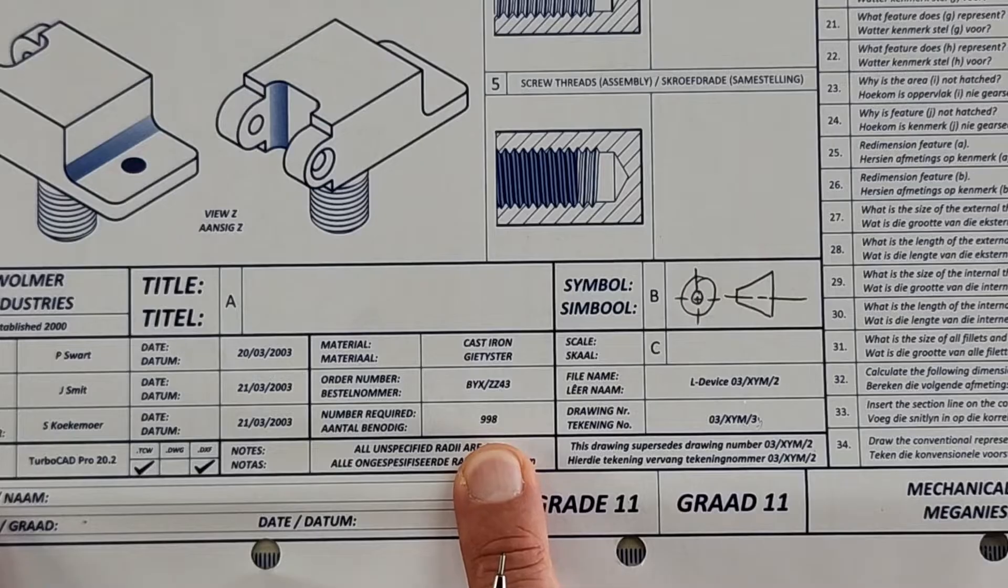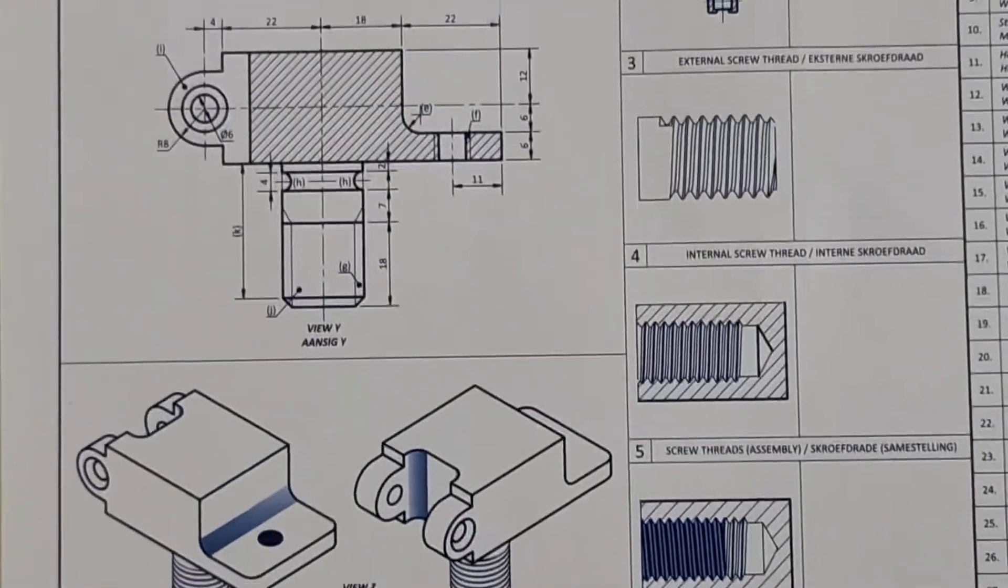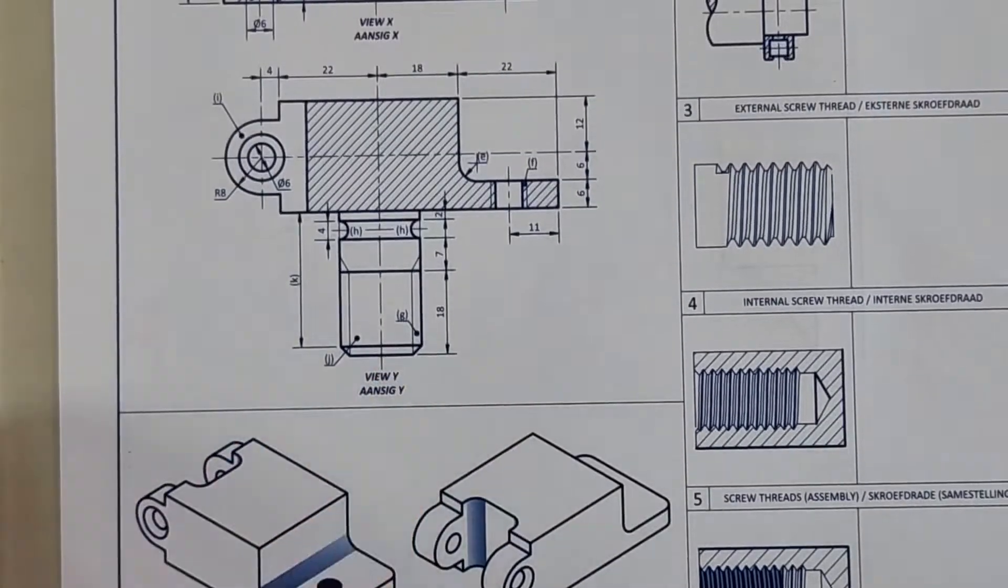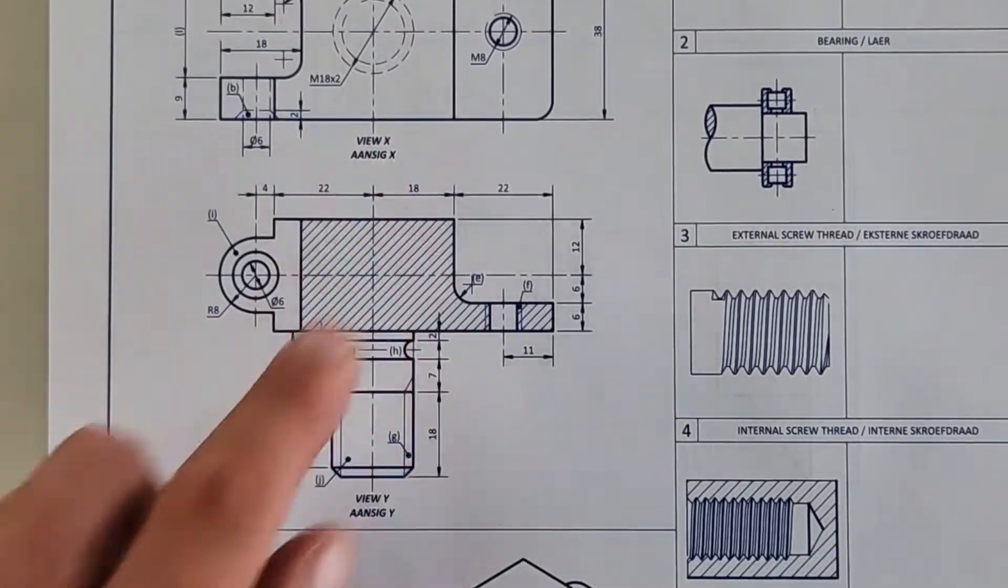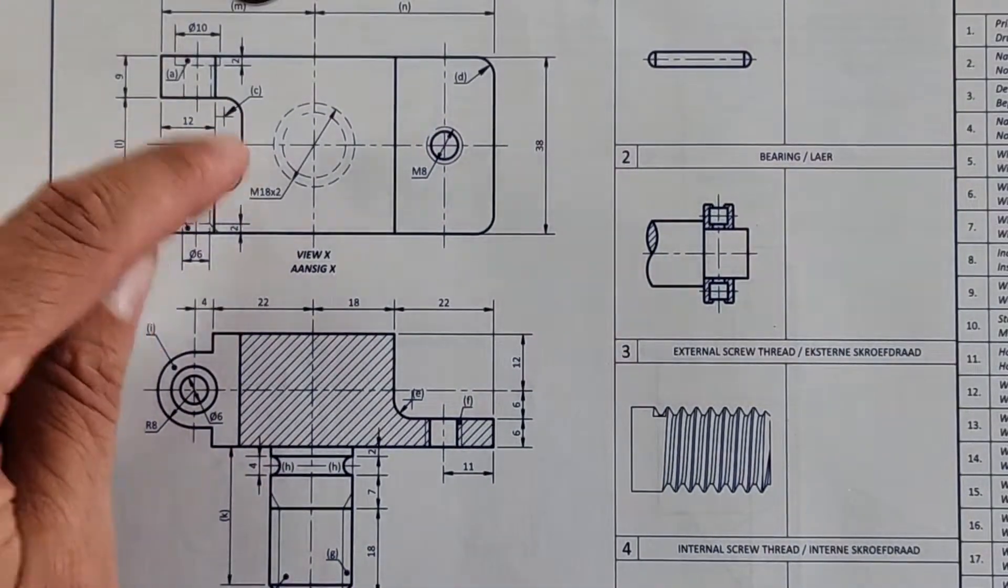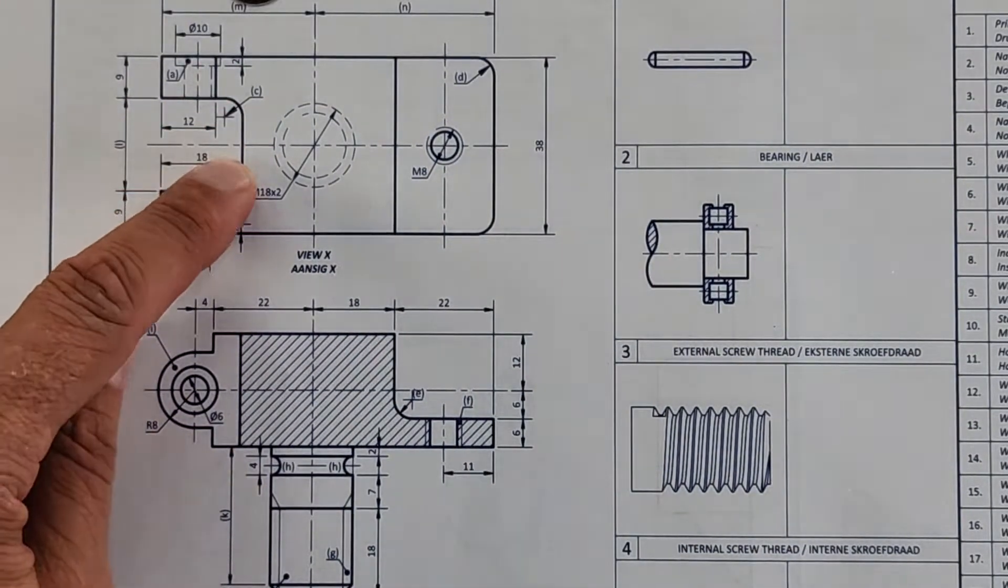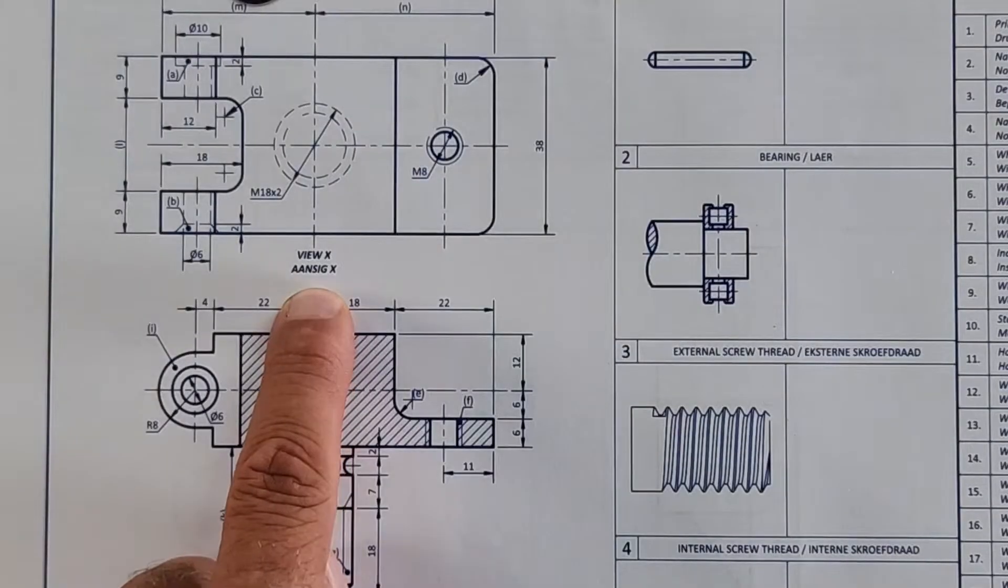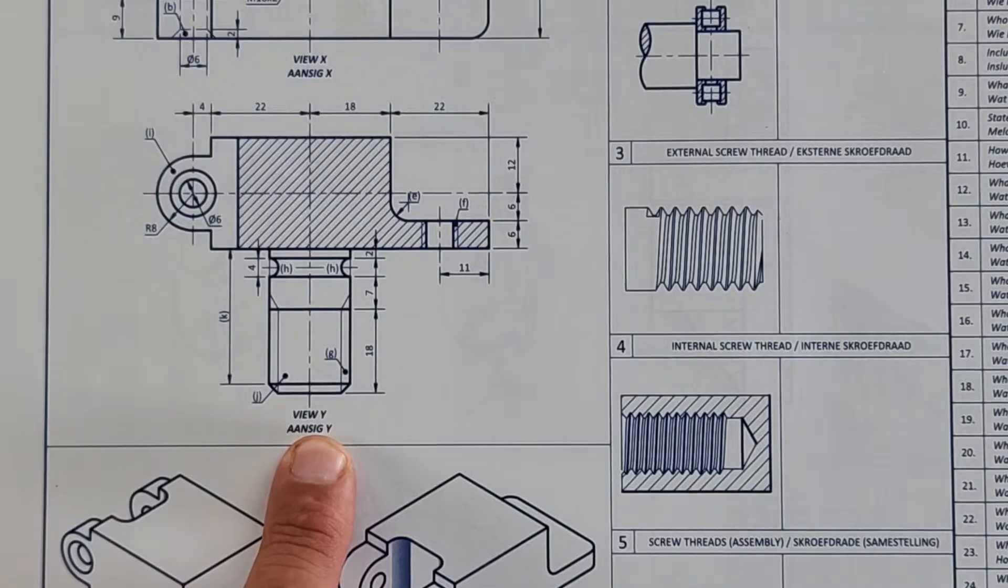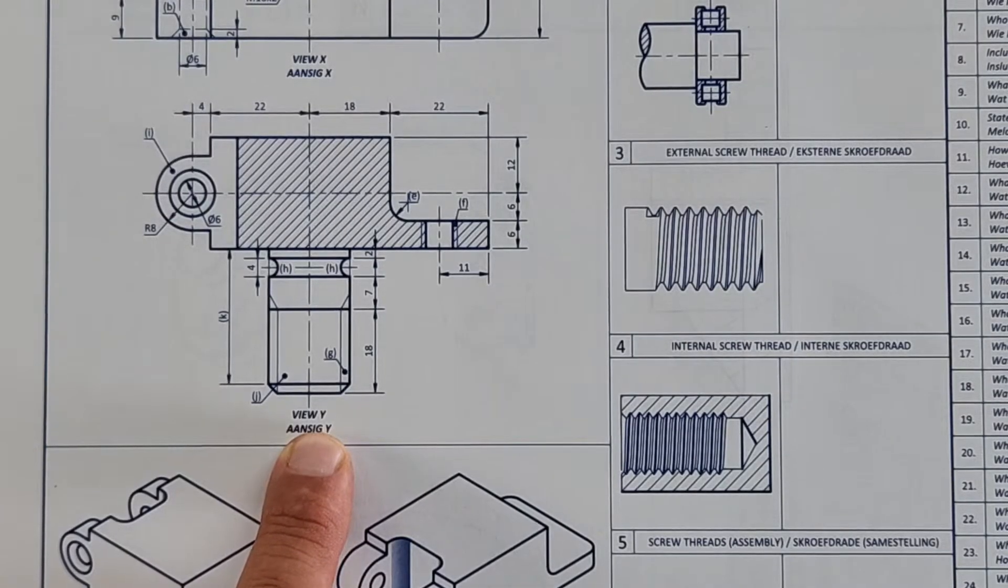What view does view X represent? So let's find X here. There's our 3D views, then we've got Y and there we have X. And this being third angle orthographic projection, this is very straightforward. That is going to be a top view, boeraansig. X is a top view. Then what does view Y represent? Y is a full sectional front view, full snit vooraansig.